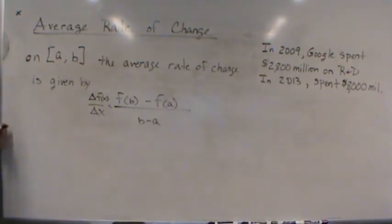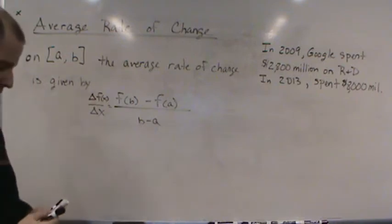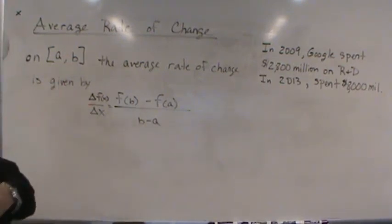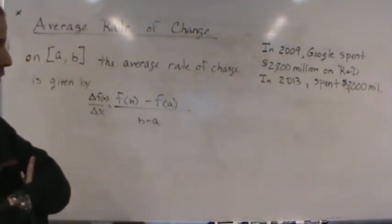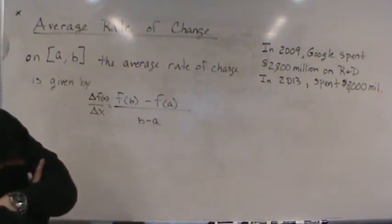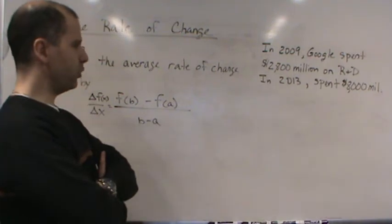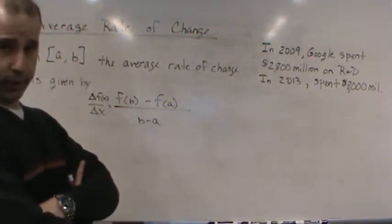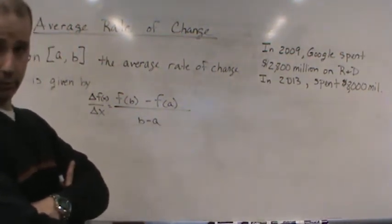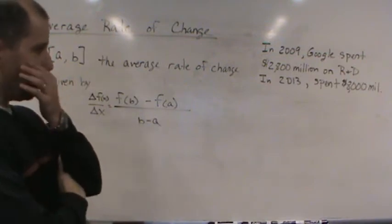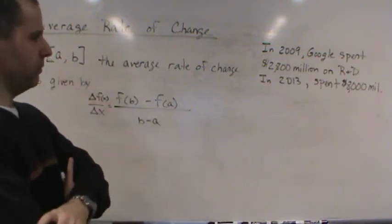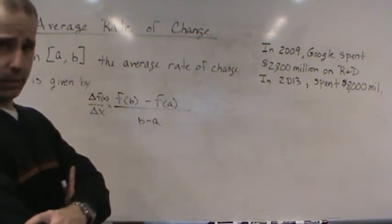Here's an example: In 2009, Google spent 2800 million dollars, or 2.8 billion, on research and development. In 2013 they spent 8000 million, or 8 billion, on R&D. The question is: what would be the average rate of change in the amount they spent on R&D?